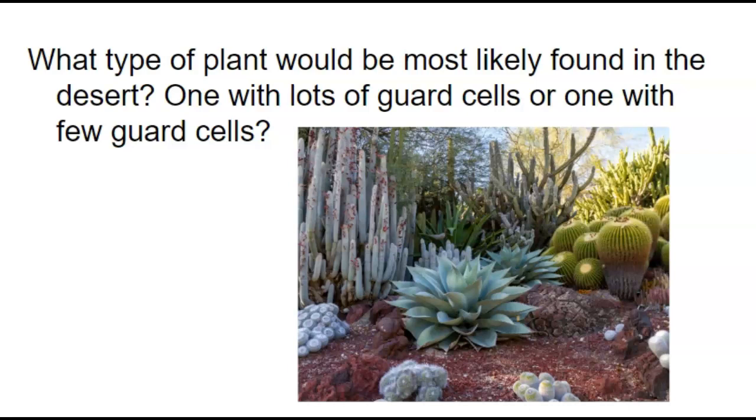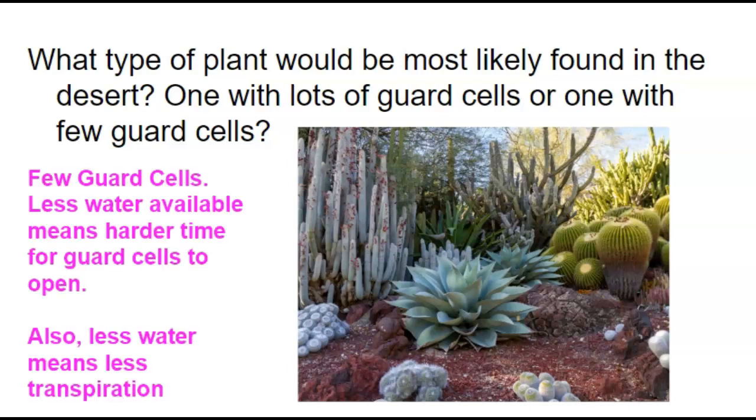Also, they're not going to need to release as much water to suck up as much water through their roots. There's going to be less transpiration happening. So they're going to have few guard cells. Harder time for them to open because there's less water available. We're also having less transpiration happening. In addition, over time, these plants have evolved to have fewer guard cells or guard cells underneath the surface of their leaves to prevent that evaporation, that transpiration, that water leaving.